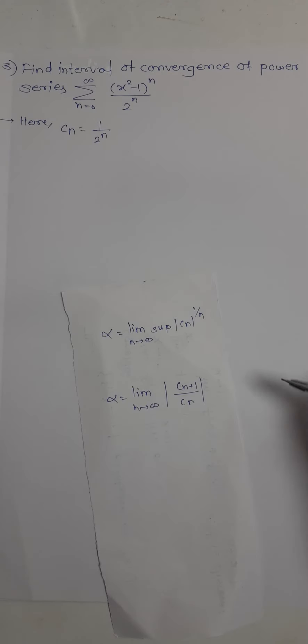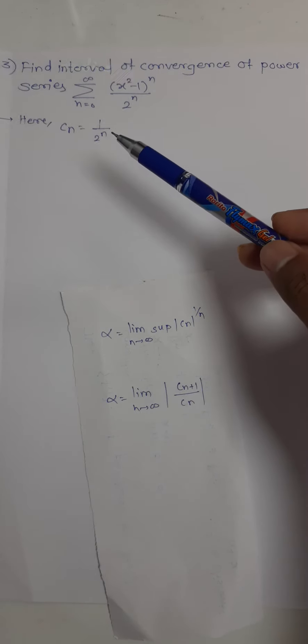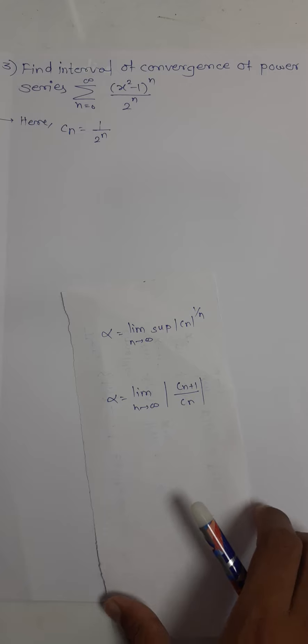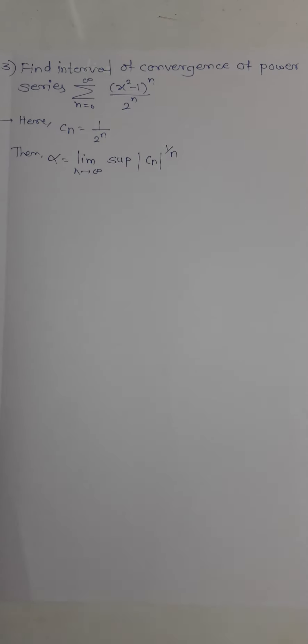There are two different formulas to calculate alpha. I think it's better to use the first formula since 2 has power n, and with the 1 by n power, there are great chances of them canceling each other.